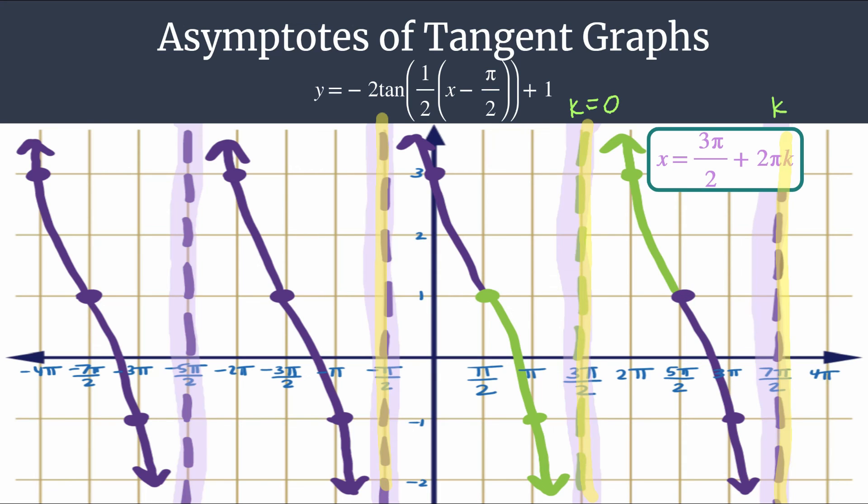So notice they go in a pattern. We have the k equals 0, k equals 1. You could imagine that you would have k equals 2 if you kept going to the right. You would have another asymptote that was 2 pi away from 7 pi over 2. We had k equals negative 1 here, k equals negative 2. And so we didn't actually substitute in negative 2, but hopefully you get the feel for how this works and how the asymptote equation will generate any asymptote that you could want on the graph.